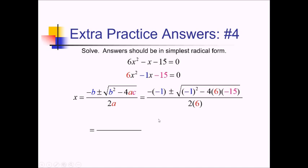Simplifying all of this, negative negative 1 is positive 1. We have plus or minus square root of: negative 1 squared is positive 1 inside there. And then we've got two negatives here, so we're going to be adding the next term. 4 times 15 would be 60, 6 times 60 is 360, so this is plus 360 inside the radical. That's all over 12. Simplifying a little further, 1 plus 360 is 361.